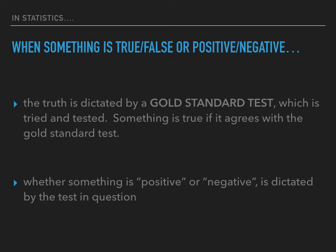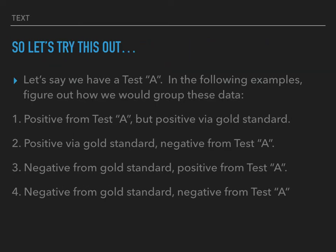We're going to go through this slowly again, so your questions will be answered. Let's say we have Test A — let's figure out how we would group these data. Example one: positive from Test A, and also positive via gold standard. Both are positive, they agree, so it's a true. But it's a true what? It's a true positive, because we got the positive from Test A.